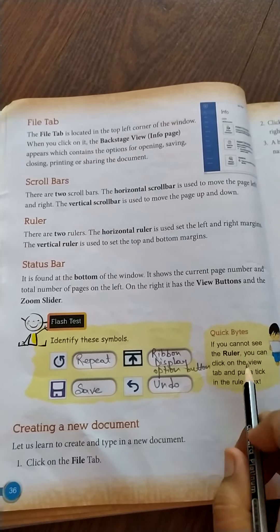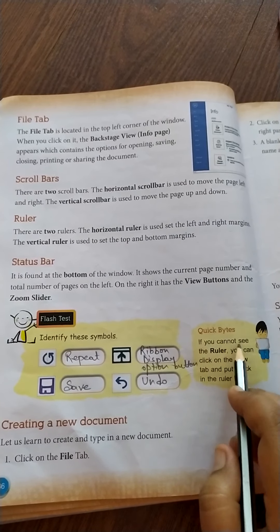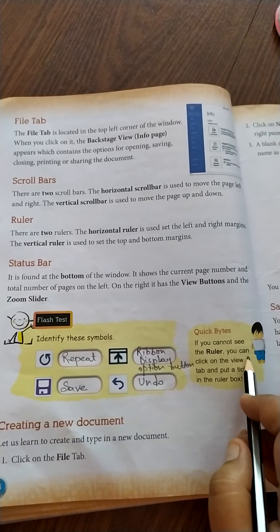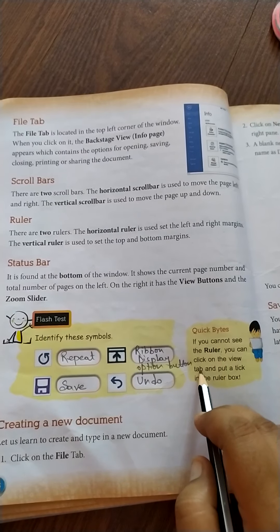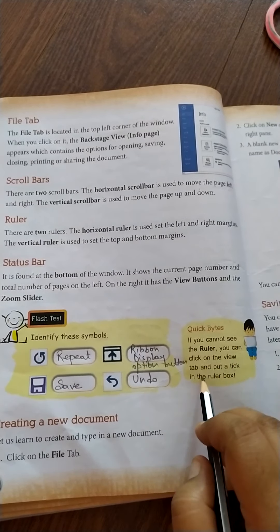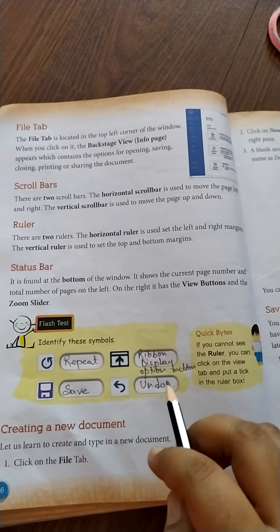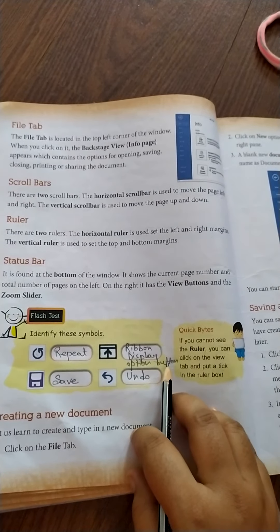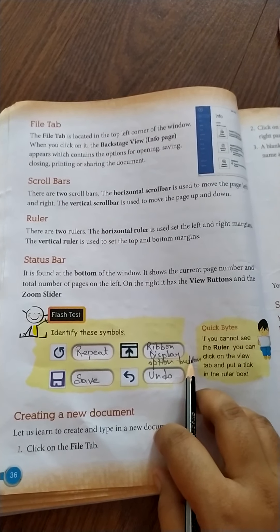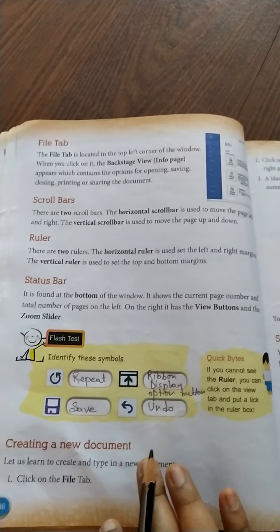Now one quick byte is here. If we cannot see the ruler, we can click on the view tab and put a tick in the ruler box, and the ruler will be displayed in the document area. So till here we will end the class.